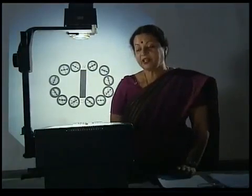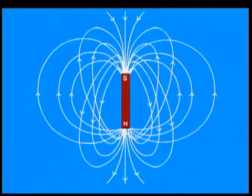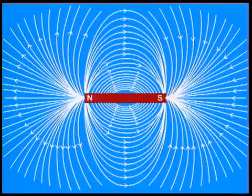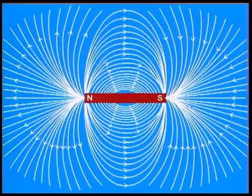Remember that the magnetic field lines of a magnet are not confined to a plane, but are in a region all around the magnet. We can observe that the field lines emerge from the north pole of a magnet and merge at the south pole.